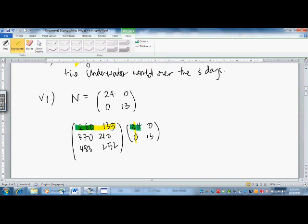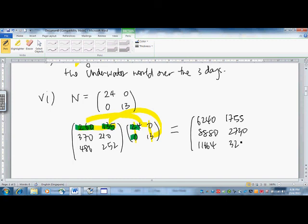For example, if I am multiplying this by 24, then 135 times 1 and times 0, because I only want to find on day 1 how much they are collecting from the adults. Likewise, for children, 0 times 260 gives 0, and 135 times 13 finds the total fees collected on day 1. The amounts collected for day 1 adults is 6240, for children 1755, 8880, 2730, 1664, and 3276.